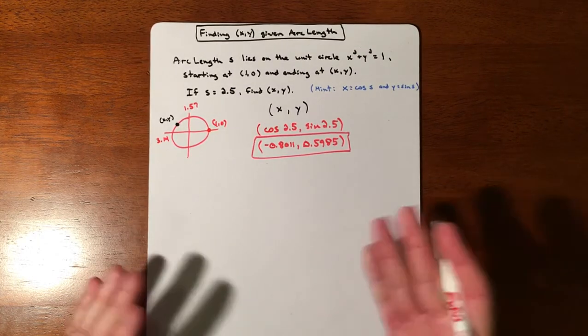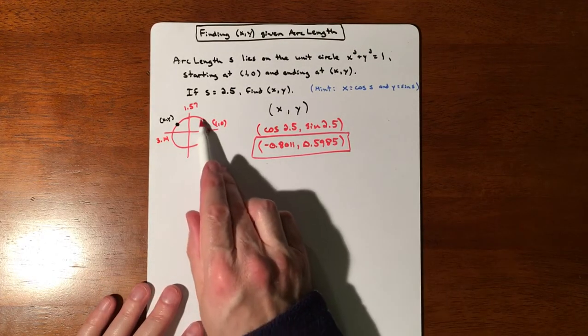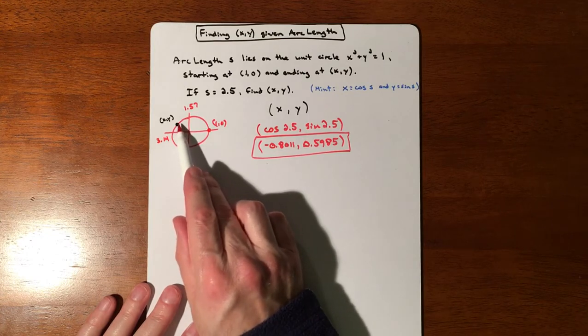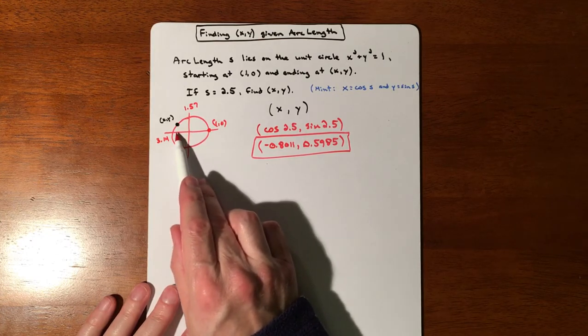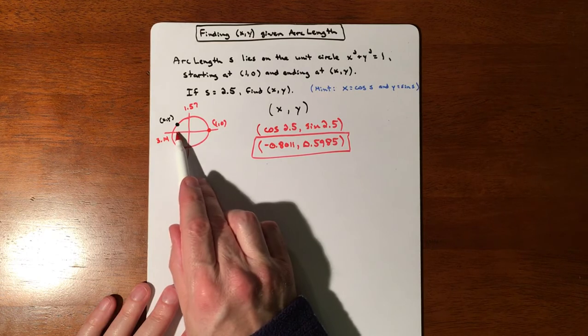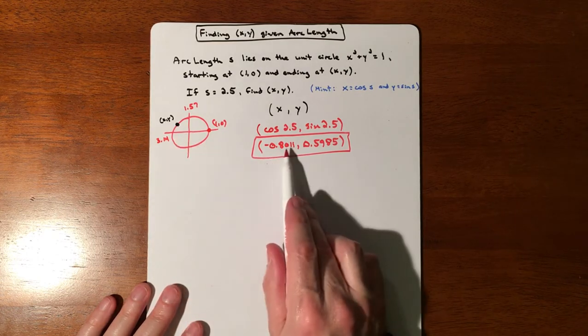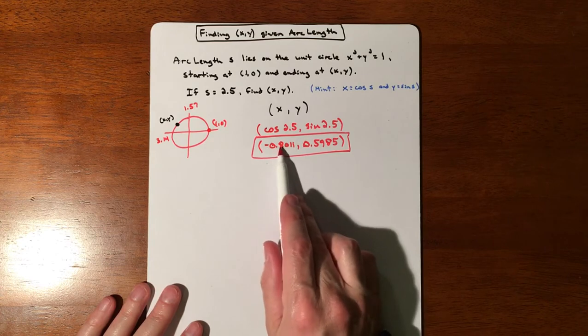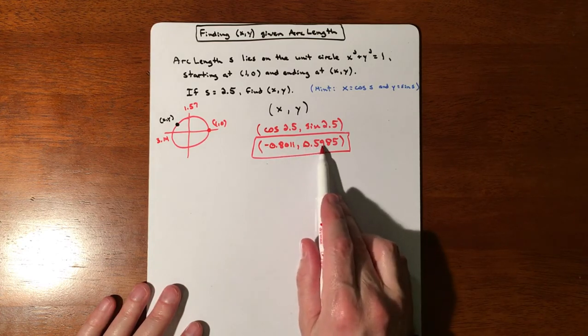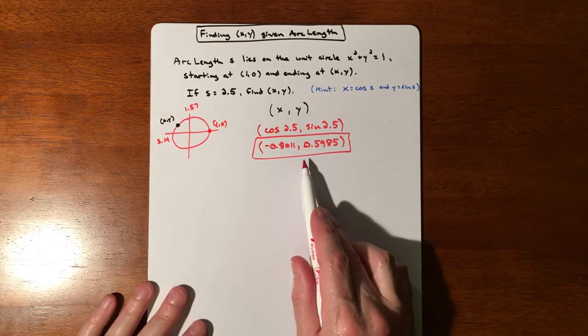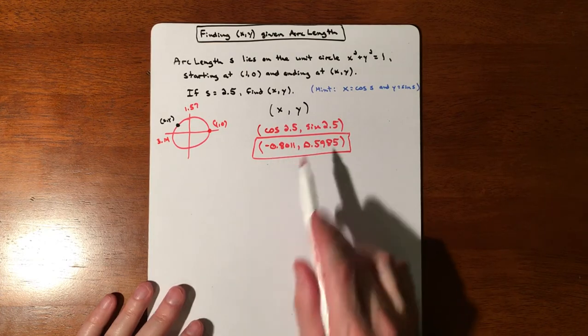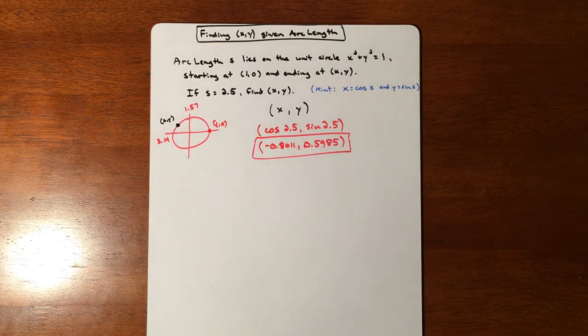So, just to make sure that it feels like a right answer, that arc length of 2.5 is somewhere in the second quadrant. Your x value should be negative, and you should have more x than you have y. You're out further than you are up. So, having a negative 0.8 versus a positive 0.5, almost 6, feels okay. And we have a negative x and a positive y. Alright, and that is it.